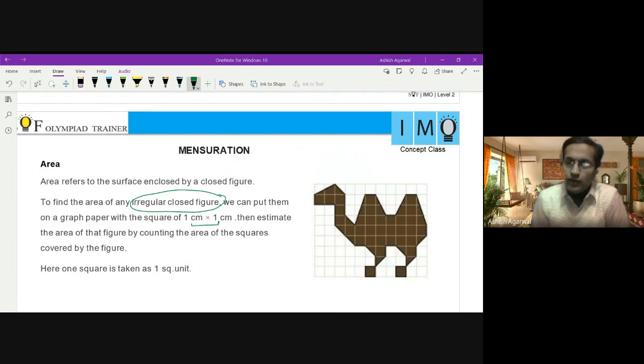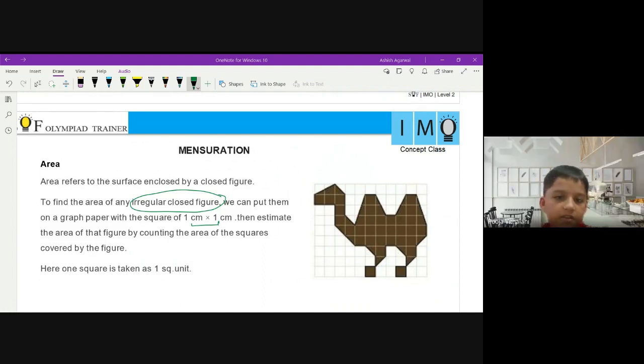Yes, Angat. Yes sir, sir we have to count the number of full squares and half squares. Two half squares equal to one full square. And if any square is less than half we have to ignore it, and if any square is more than half we have to count it as a full square.